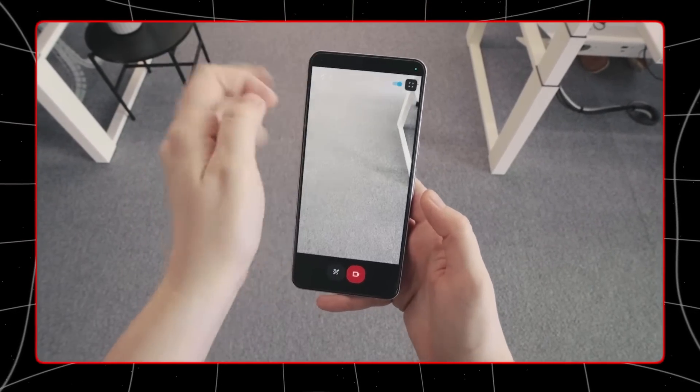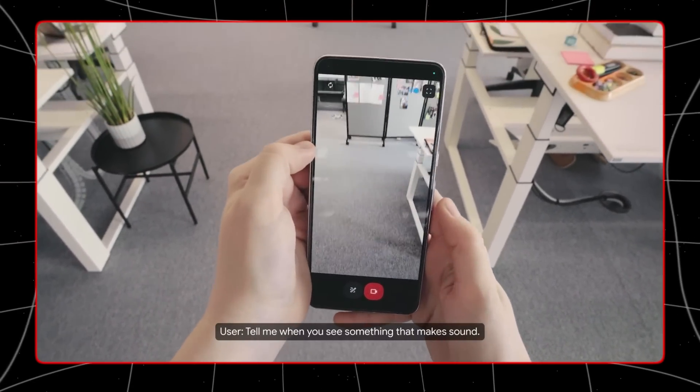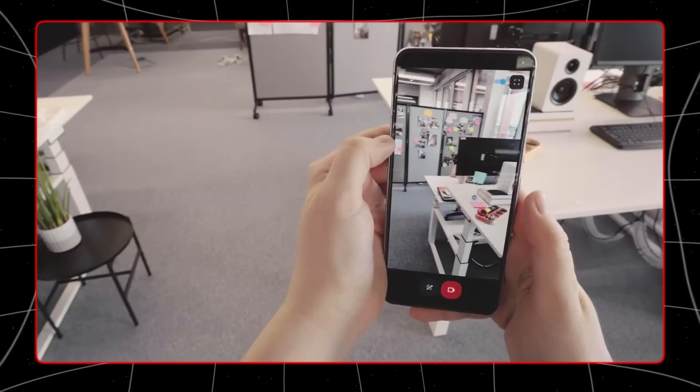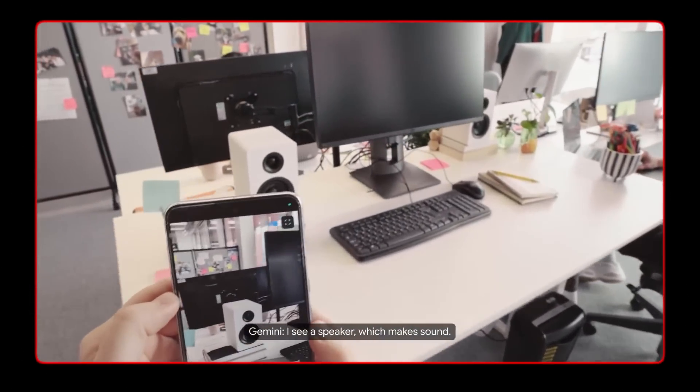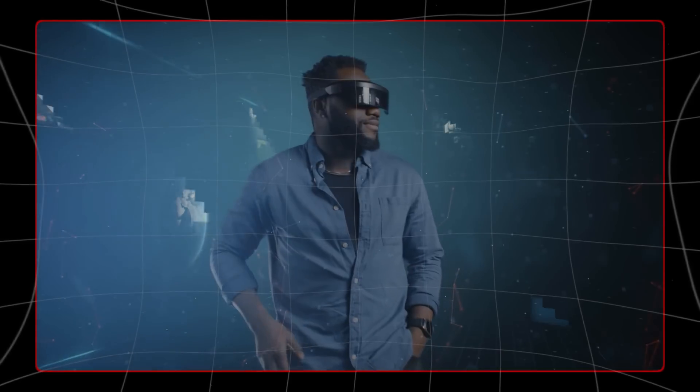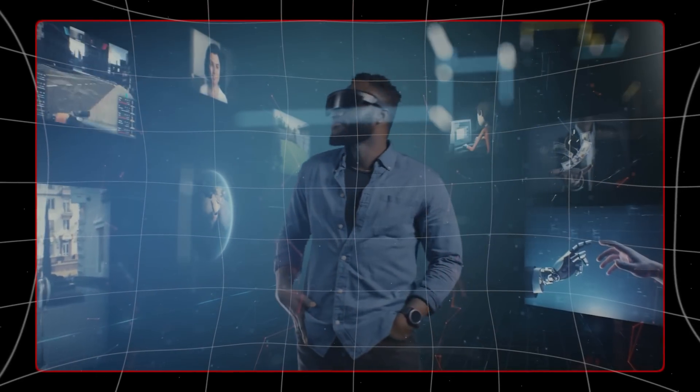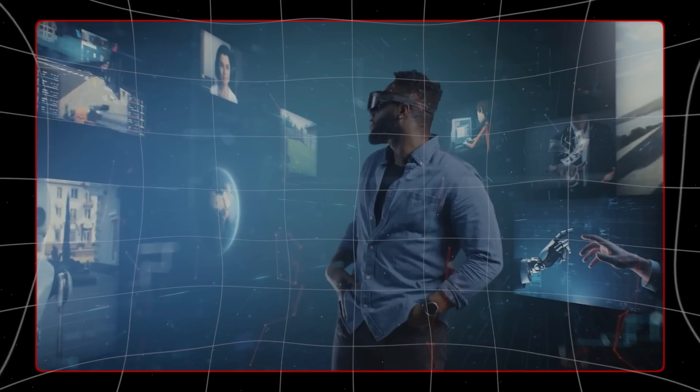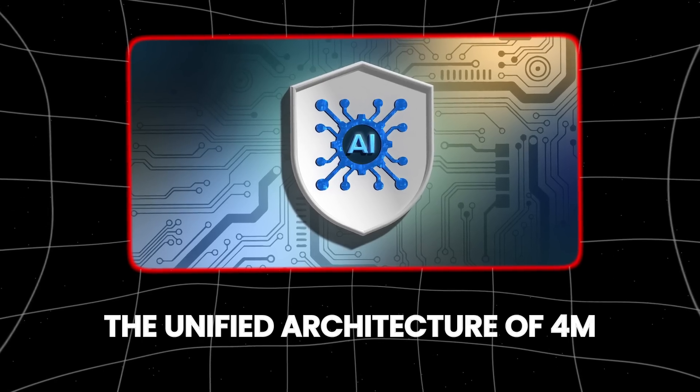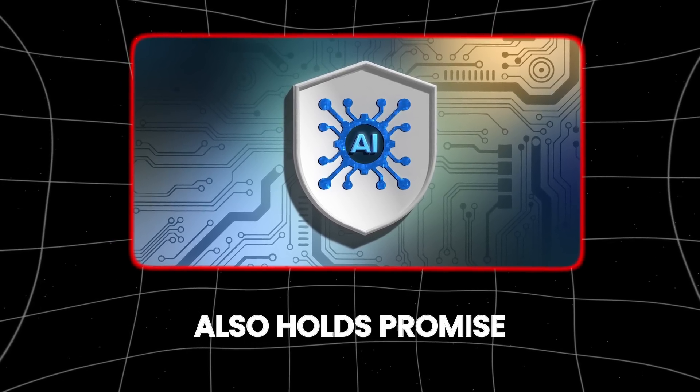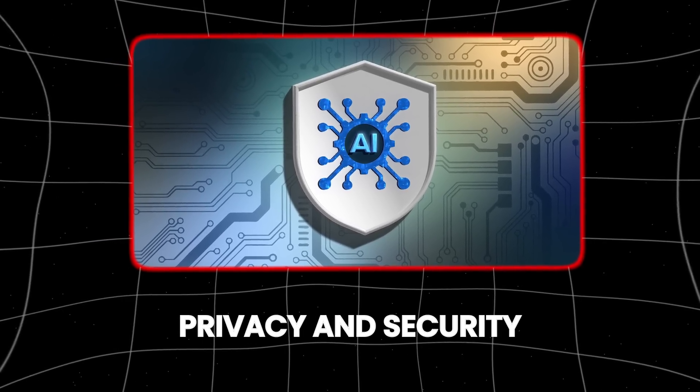For instance, a visually impaired user could receive detailed verbal descriptions of their surroundings captured through their device's camera, while also being able to input commands via voice or text. This multimodal approach ensures that the AI can adapt to various user needs and preferences, making technology more inclusive.